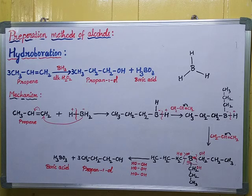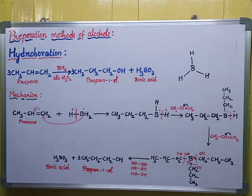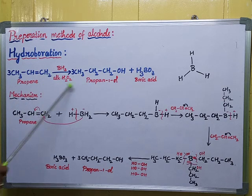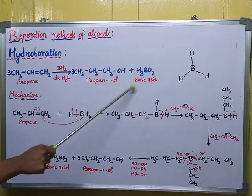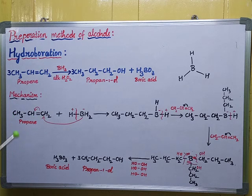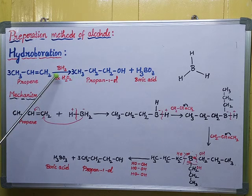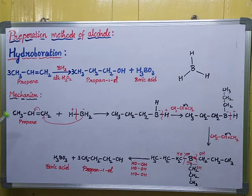Hello students, today I am explaining the preparation method of alcohols — that is hydroboration. In this technique, propene reacts with borane in the presence of alkaline hydrogen peroxide to produce propanol along with boric acid as a byproduct. In this reaction, alkenes are converted into alcohols through the oxidation process, which takes place in the presence of hydrogen peroxide. Let us see the mechanism of the reaction.